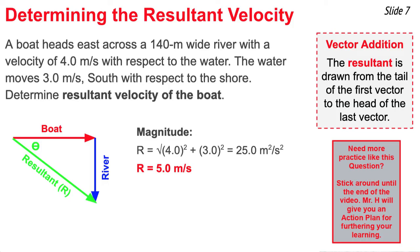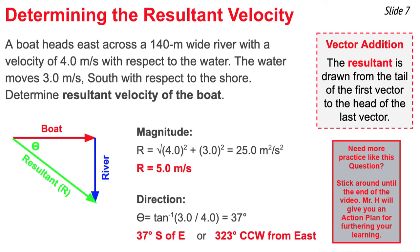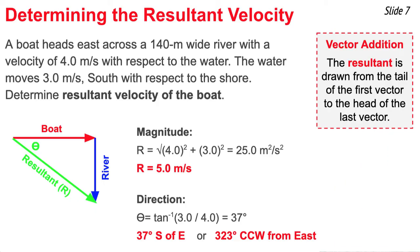To determine the direction of this resultant, we calculate the angle theta within that right triangle. The tangent of theta is the ratio of the side opposite — the river velocity — divided by the side adjacent — the boat velocity. That is, theta equals the inverse tangent of 3 divided by 4, which comes out to be 37 degrees. We can express that direction as 37 degrees south of east, or equivalently as 323 degrees counterclockwise from east, which is counterclockwise past south and another 53 degrees past south.